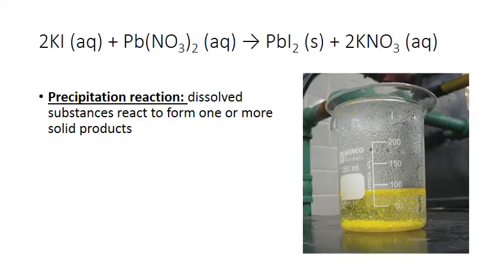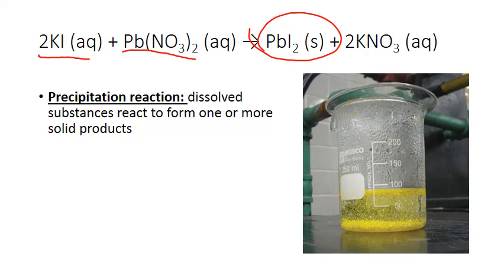Precipitation reactions are ones in which dissolved substances react to form one or more solid products. Here's an example: an aqueous solution of potassium iodide is mixed with one of lead nitrate. When these two clear solutions are mixed, they end up forming a yellow solid — lead iodide — which you can see forming and settling to the bottom. Remaining dissolved in solution is the other product, potassium nitrate.